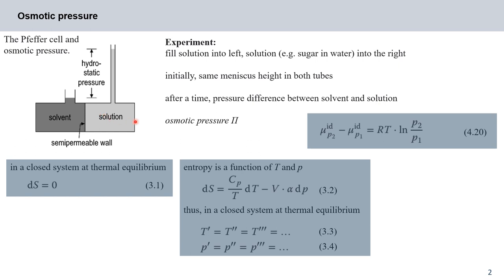At equilibrium the solution is under a pressure that is higher by the amount of hydrostatic pressure, visualized by this height difference. We call this pressure difference the osmotic pressure, denoted large pi.